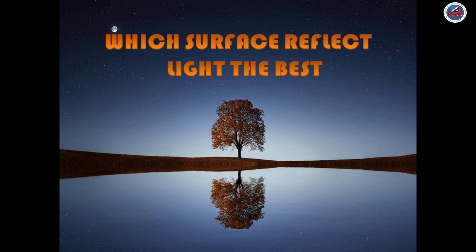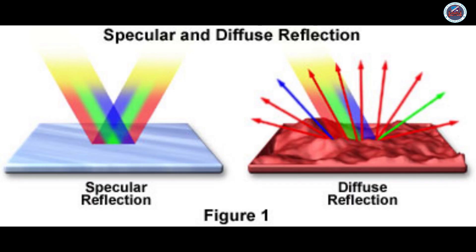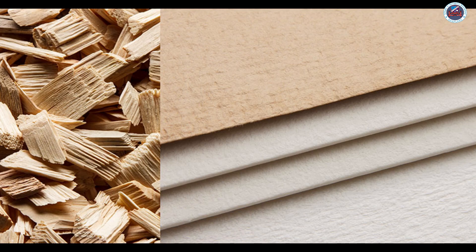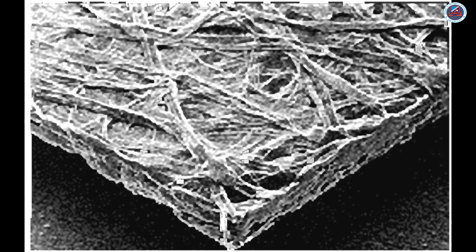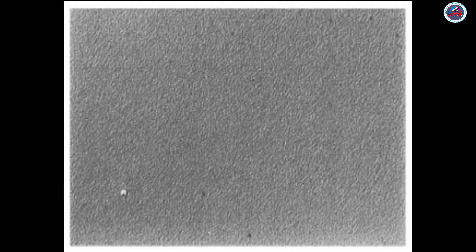Which surface reflects light the best? Some surfaces reflect light while some surfaces absorb light. If we hold a paper or a piece of wood, we will not be able to see a reflection or image in it. The surface may seem smooth when we feel it, but if we look at the surface of the paper or wood under a microscope, we will see that it is not smooth — so it will not reflect light; in fact, it will absorb the light. If we see the surface of a mirror under a microscope, we will see that it is very smooth.